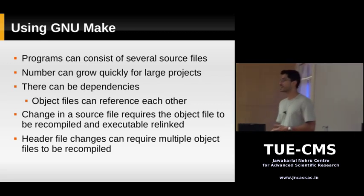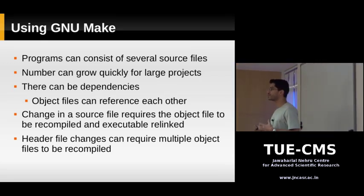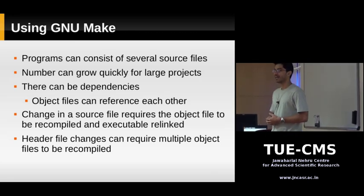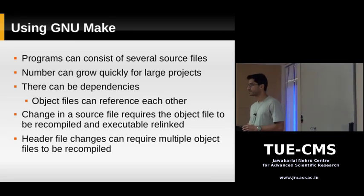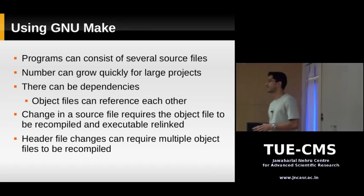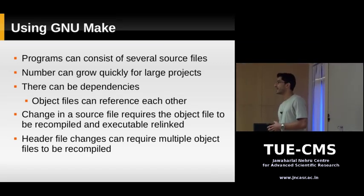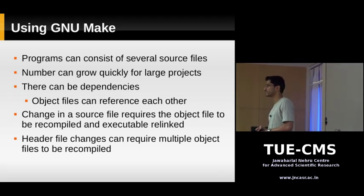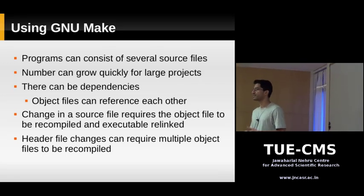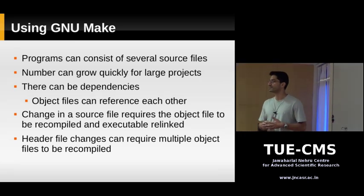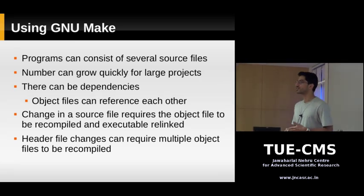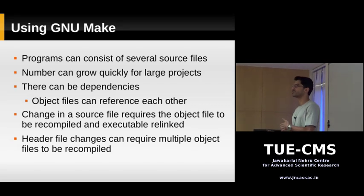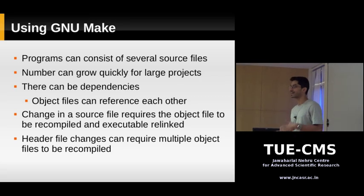When you have a large number of source files, you've got to be creating a lot of object files, and these object files are going to have dependencies among them. Suppose you build your executable and then change one source file — maybe you fixed a bug or added a feature. You need to recompile that particular source file into an object file and then relink your executable. Source files that didn't change don't need recompilation.